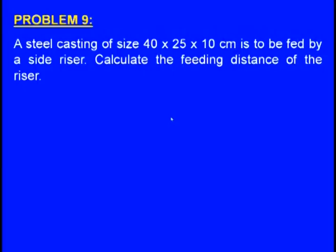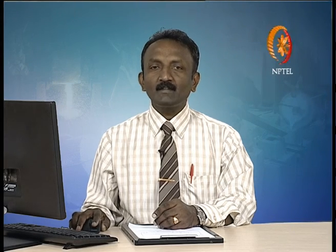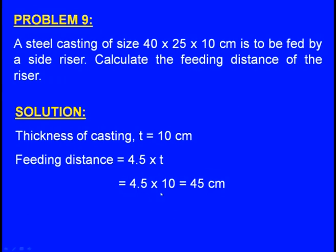Problem: a steel casting of size 40 × 25 × 10 cm is to be fed by a side riser. Calculate the feeding distance. Thickness T = 10 cm. Feeding distance = 4.5T = 4.5 × 10 = 45 cm. That is the feeding distance.